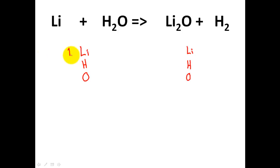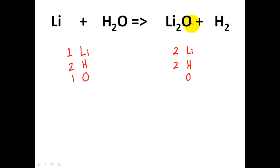I have one lithium, two hydrogens, and one oxygen. On the product side, I have two lithiums, two hydrogens, and one oxygen. We clearly see that the reactants don't equal the number of atoms in the products, so we have to balance this in order to satisfy the law of conservation of mass.